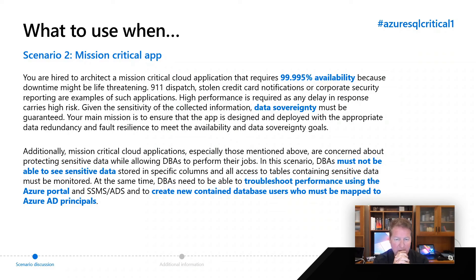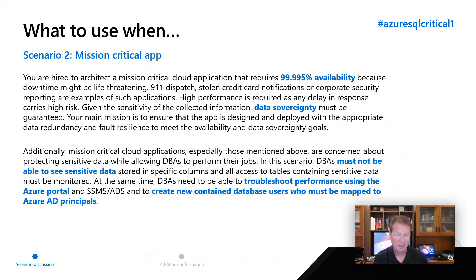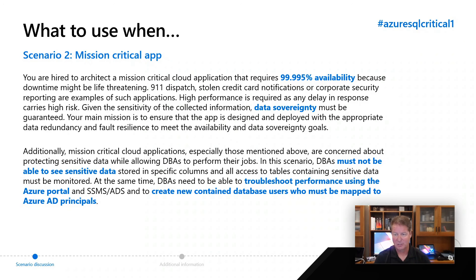The troubleshooting one is interesting — DBAs need to troubleshoot performance from the portal. Everybody has a portal subscription, so I don't see any problem there; they'd just get access to the portal. And in SSMS, they just have access already, so that's no big deal. Creating new database users who must be mapped to Azure AD principals — even though you can do a contained database in Managed Instance just like a SQL Server, the Azure SQL model already gives you this containment idea, and then you can map to an Azure directory login. So I would pick Azure Database overall with Business Critical, availability zones, dynamic data masking, and the contained user authentication method.